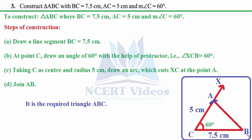At point C, construct angle XCB equals 60 degrees. With compasses: place needle at C, open to a certain radius, and draw an arc. Without changing radius, place needle where the arc crosses the line — wherever it cuts gives 60 degrees. Placing the needle again at that point gives 120 degrees; the perpendicular between them is 90 degrees. Now use the ruler to extend the 60-degree ray to a suitable length.